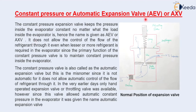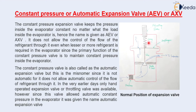Now let's see the constant pressure or automatic expansion valve, also called AXV. In the automatic expansion valve, the arrangement includes a strainer at the inlet through which refrigerant enters and flows to the evaporator. The strainer removes foreign particles and dust. The valve assembly consists of a needle and seat valve, a diaphragm, a spring, and an adjusting screw with which the spring pressure can be adjusted.